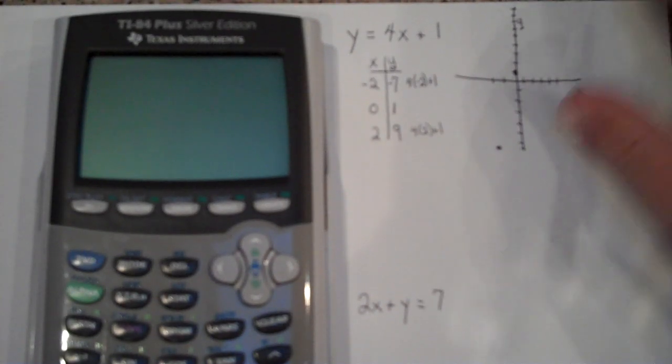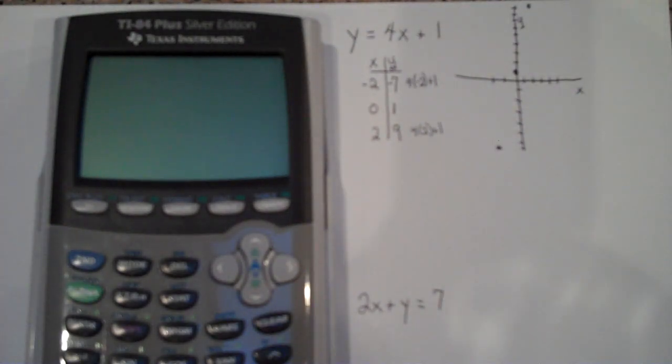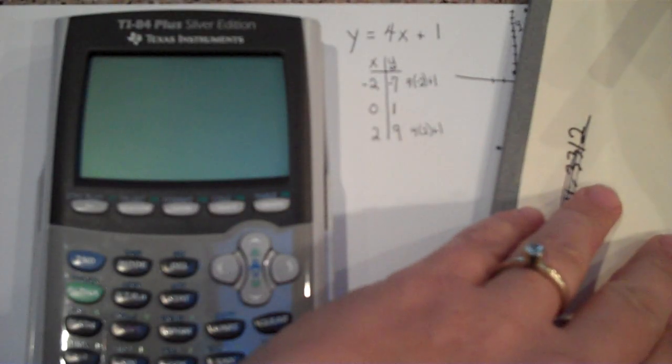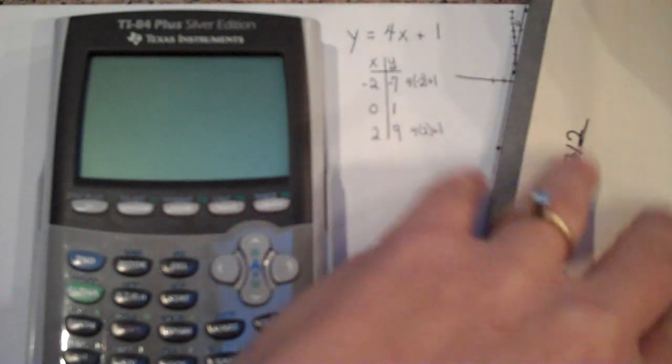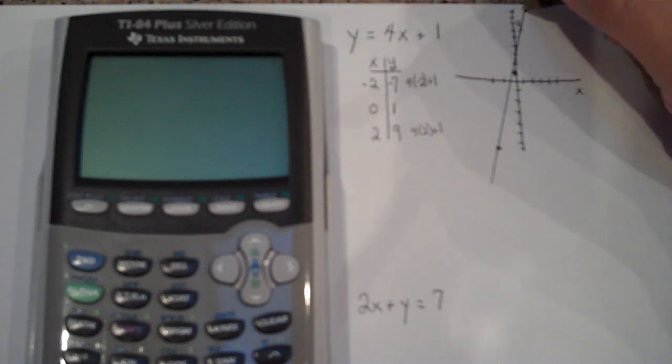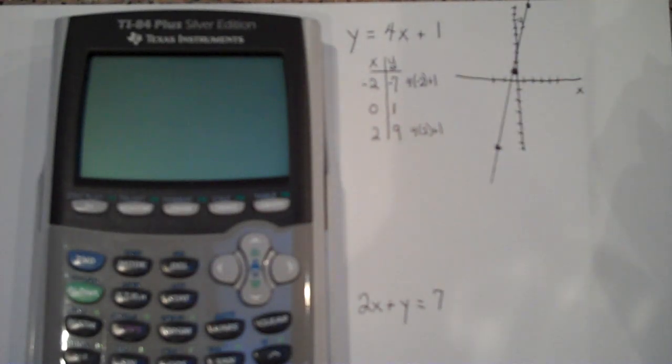Let me bring that down just a little bit here. So 2, 9 is going to be right here. And then if I take a straight edge and connect these, then I'm going to have a really good idea, given the inaccuracy of drawing by hand without graph paper, of what my graph is going to look like.